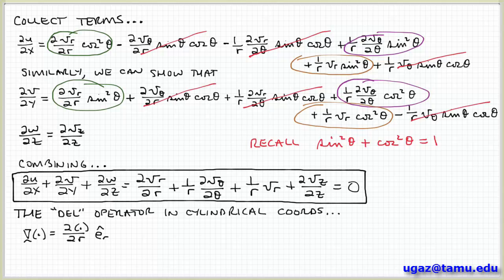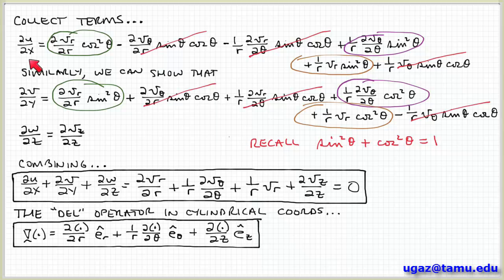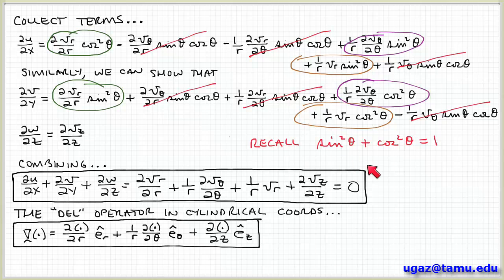Using the geometry examined in the previous videos, and being careful to keep track of what we're doing, we can transform velocity vector components and their derivatives from Cartesian coordinates into other coordinate systems — specifically cylindrical coordinates, as shown here. The key idea is just geometry and comparing triangles. You end up with complicated-looking equations, but the basic idea is straightforward geometry. The details make it look complicated, but given enough time you could sit down and figure it out.